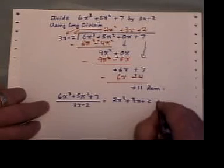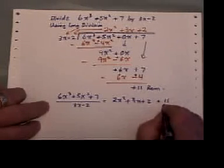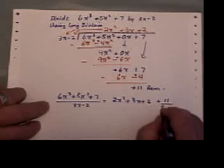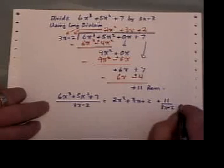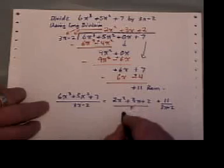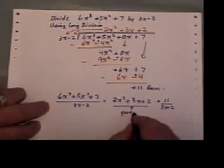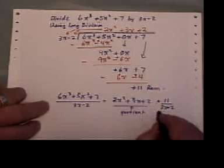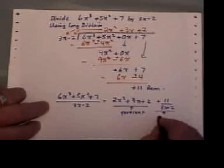And I get a remainder of plus 11. And I was dividing it by 3x minus 2. So that part there is my quotient. And this part here with its sign is the remainder.